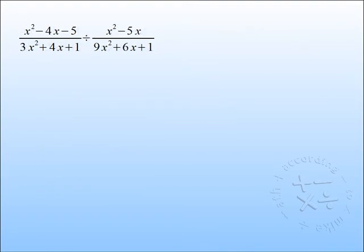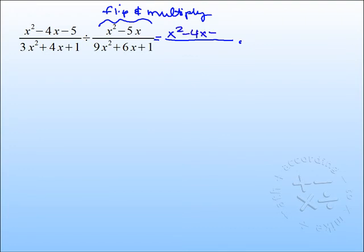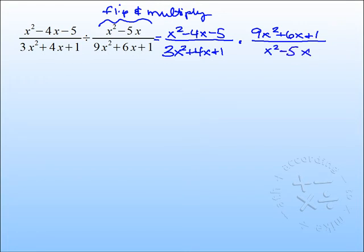Now, when you divide rational expressions, there's just one extra step in the beginning. That is to flip and multiply. I'm just going to rewrite the whole thing. x squared minus 4x minus 5. This first fraction does not change. Over 3x squared plus 4x plus 1, times the denominator becomes the numerator, 9x squared plus 6x plus 1 over x squared minus 5x. So now this problem is like our previous example where we were just plain old multiplying. So the two steps follow. Factor, cancel.